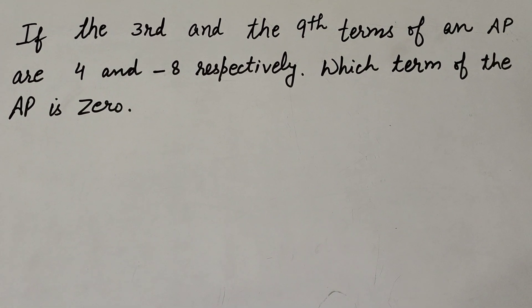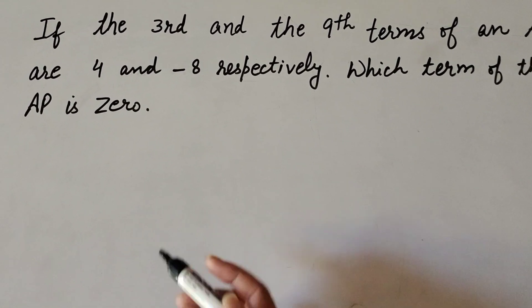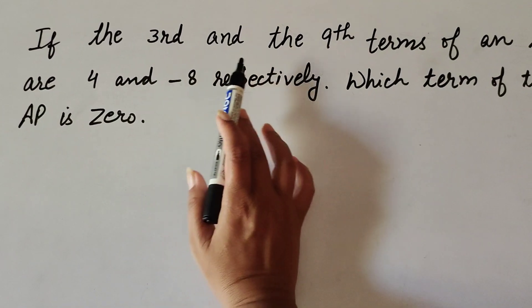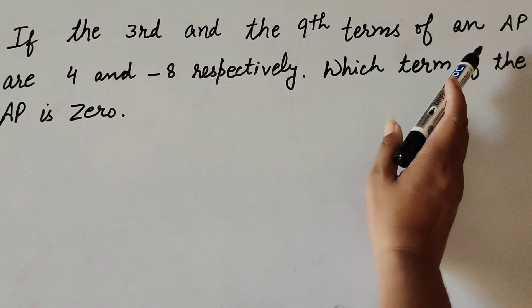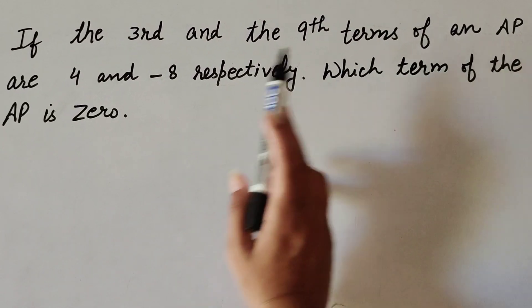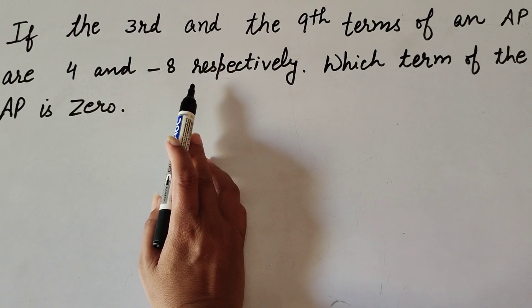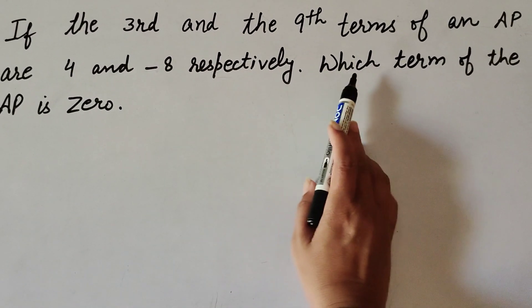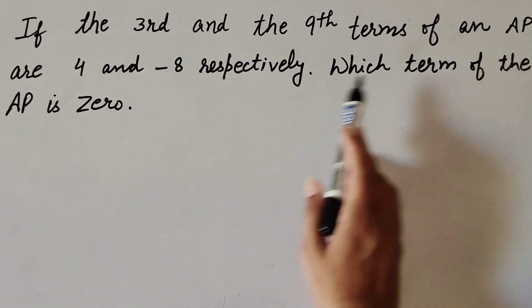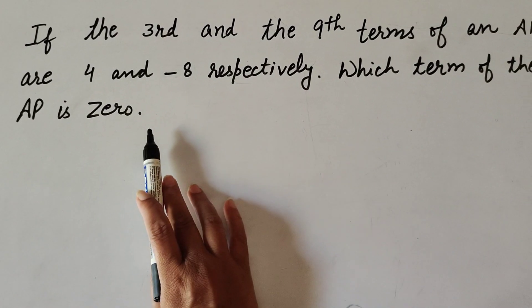Hello friends, welcome to my YouTube channel. In this video we discuss: if the 3rd and 9th term of an AP are 4 and minus 8 respectively, which term of the AP is 0?